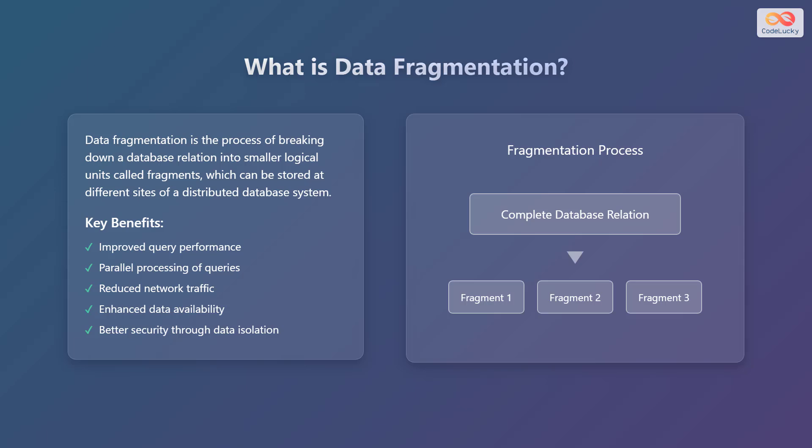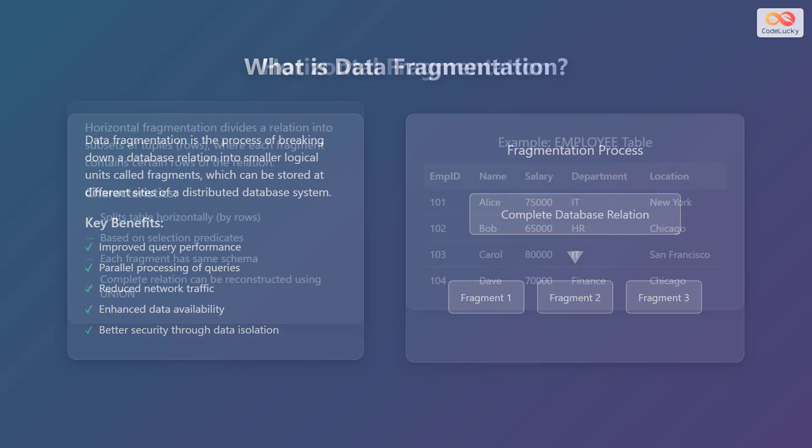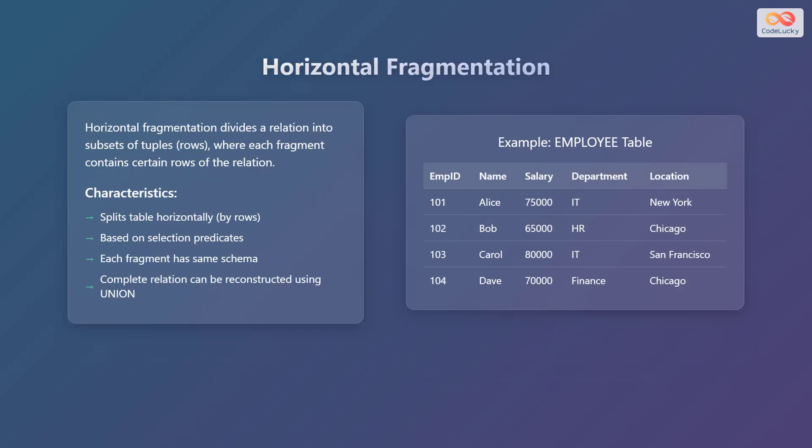Think of a complete database relation being divided into fragment 1, fragment 2, and fragment 3. Horizontal fragmentation involves dividing a relation into subsets of tuples, also known as rows, where each fragment contains specific rows of the relation. In simpler terms, we're splitting the table horizontally based on certain criteria.